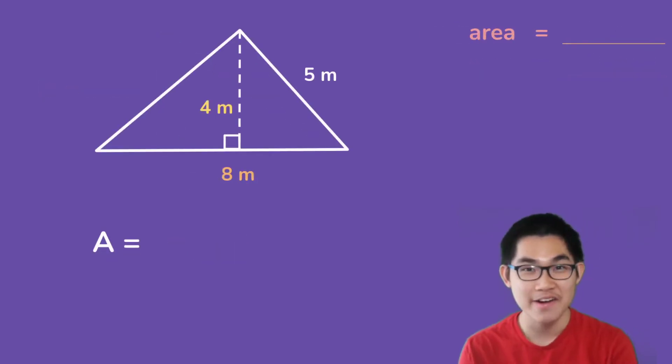What is the area of this triangle? Well the area is 1/2 times the base times the height. Now one thing to notice is that the base and the height must form 90 degree angles. So it has to form a right angle here. And so because this side and this side form a right angle, we know that the base is 8 and the height is 4.